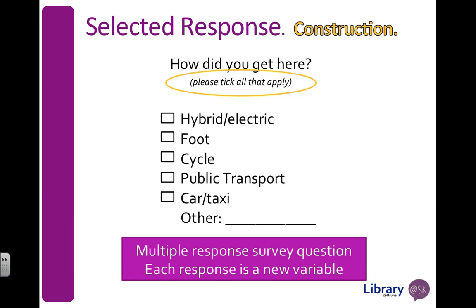What we have to do is consider each of these options as a separate variable. So hybrid electric is a separate variable, foot (they walked) is a variable, cycled is a variable, public transport is a variable, and car, taxi, and other is a variable as well.